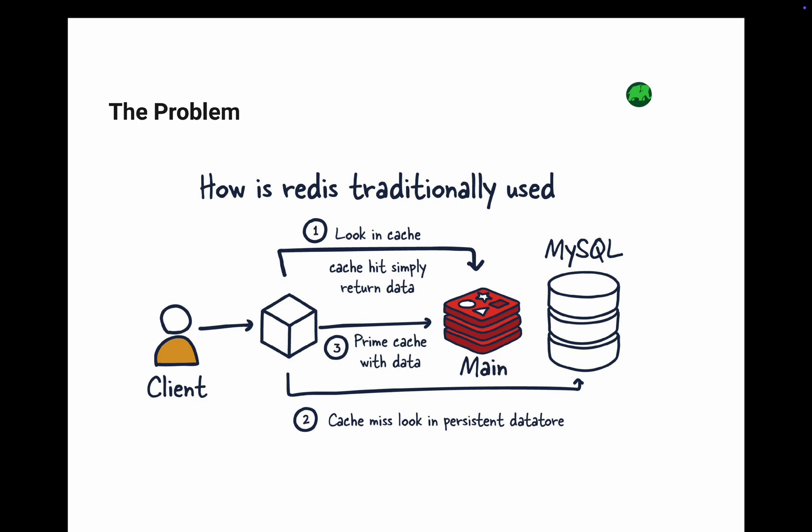Here is how it works traditionally. The client sends a request to the server. The server checks the cache. If the data is there — a cache hit — it is returned instantly. But if the data is not in the cache — a cache miss — the server queries the persistent database, retrieves the data, and primes the cache for future requests. But what happens when there is no caching layer? Every single request hits the database, which slows everything down.